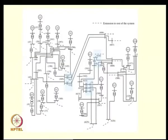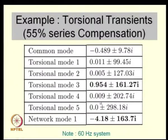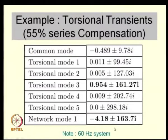How can you avoid sub-synchronous resonance? One way is to prevent coincidence of the network mode with a torsional mode. If there is no coincidence, the effect on other torsional modes is quite low. Torsional modes 1, 2, and 4 have low adverse interaction, and with mechanical viscous damping present they would be stable. The problem comes in torsional mode 3 where there is a good coincidence, so it makes sense to limit series compensation to avoid that coincidence.